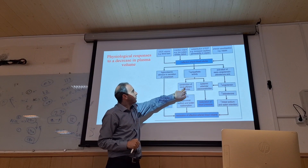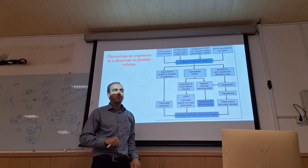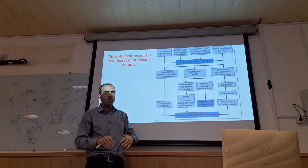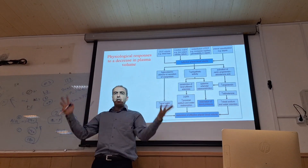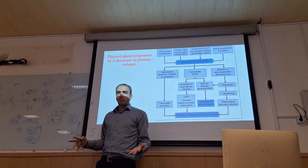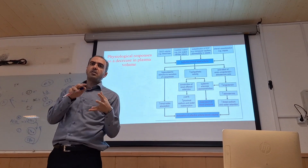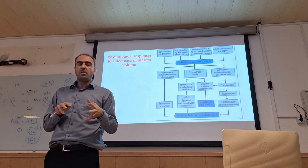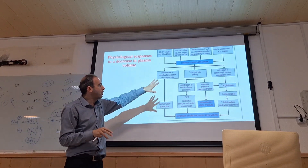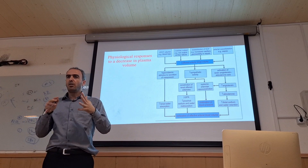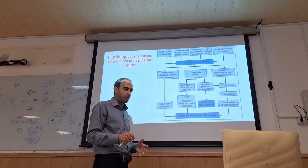Also, constriction of the renal afferent artery decreases GFR and helps increase blood pressure. So our body has different mechanisms, but the main one involves the kidney. If you look at them, all of them pass through the kidney to restore blood pressure. Here we have some disturbance in fluid volume.